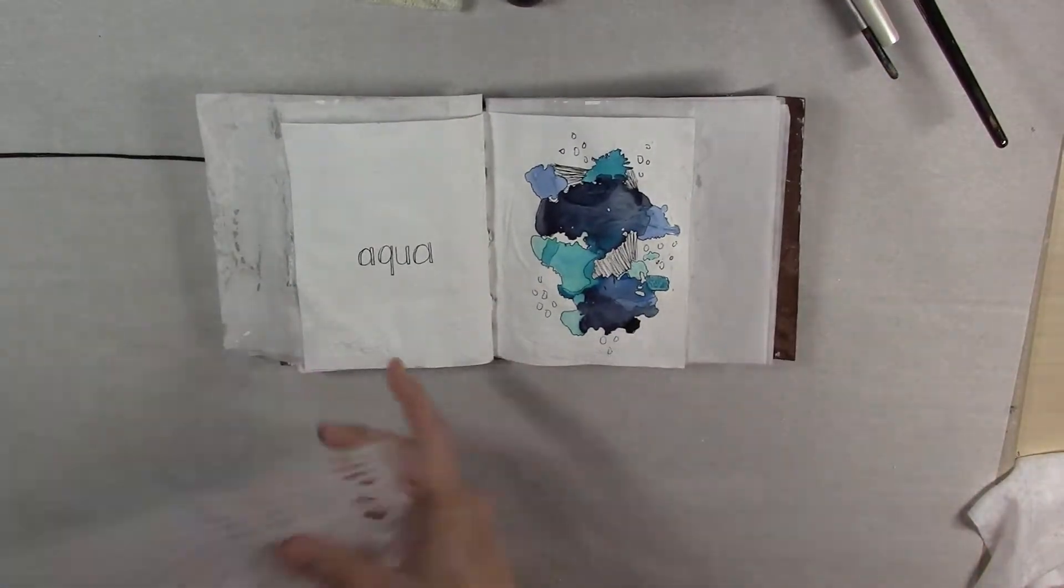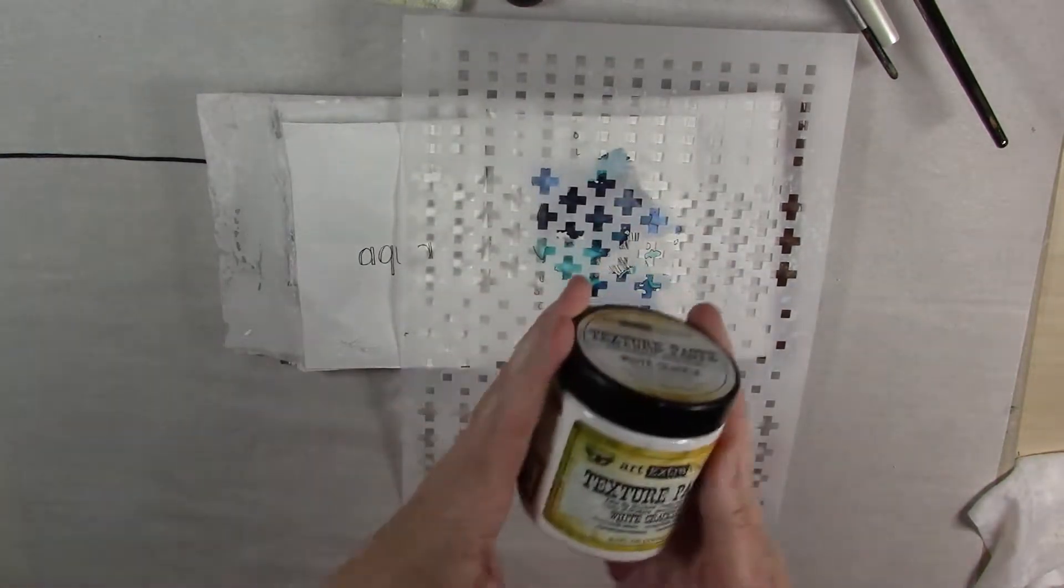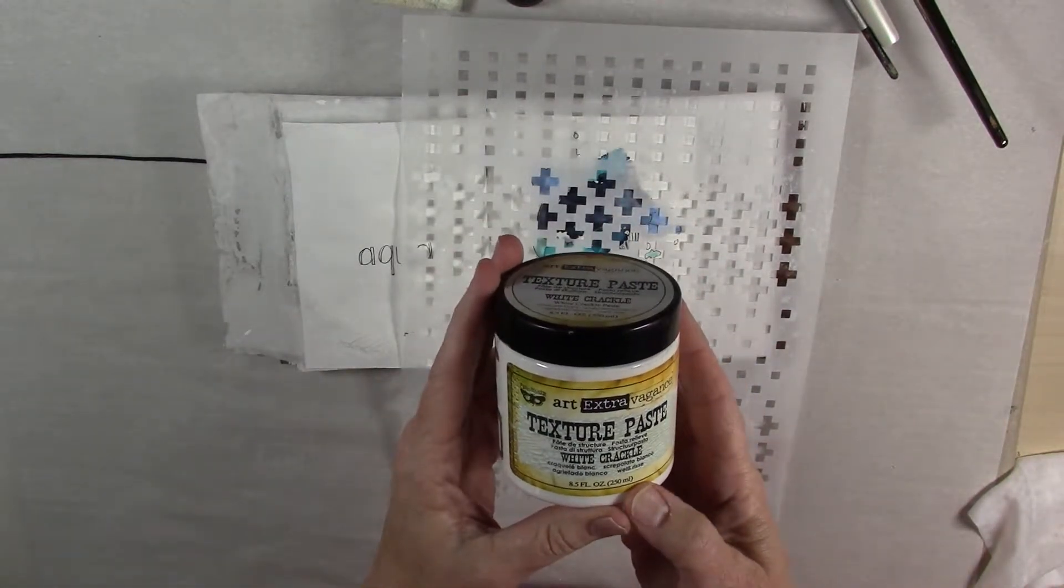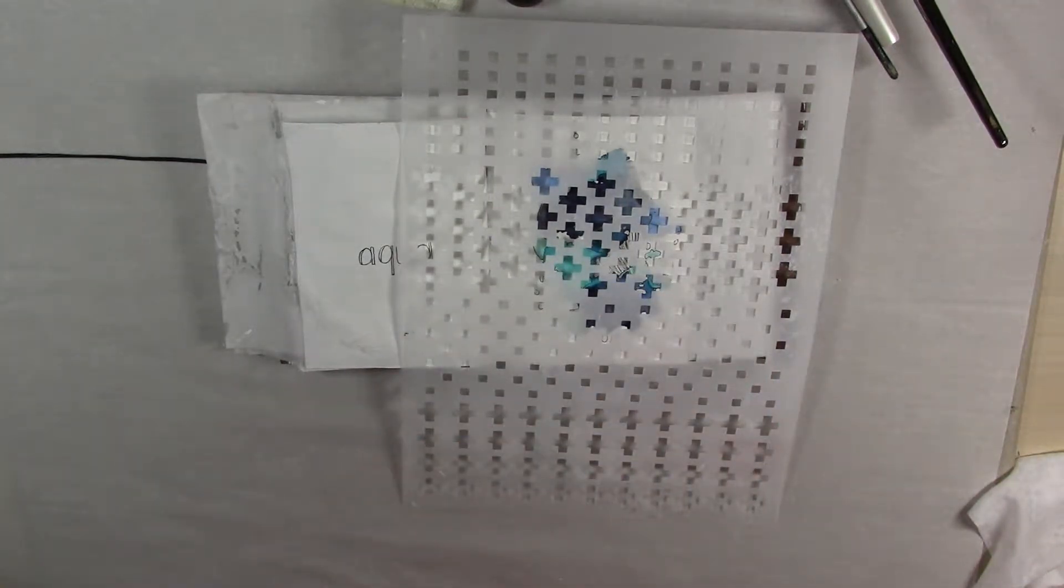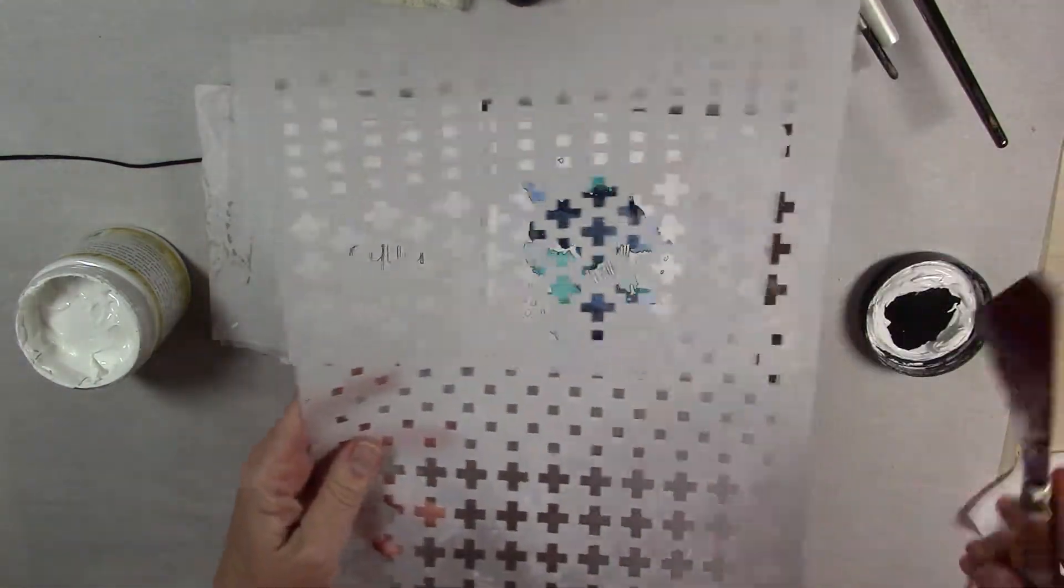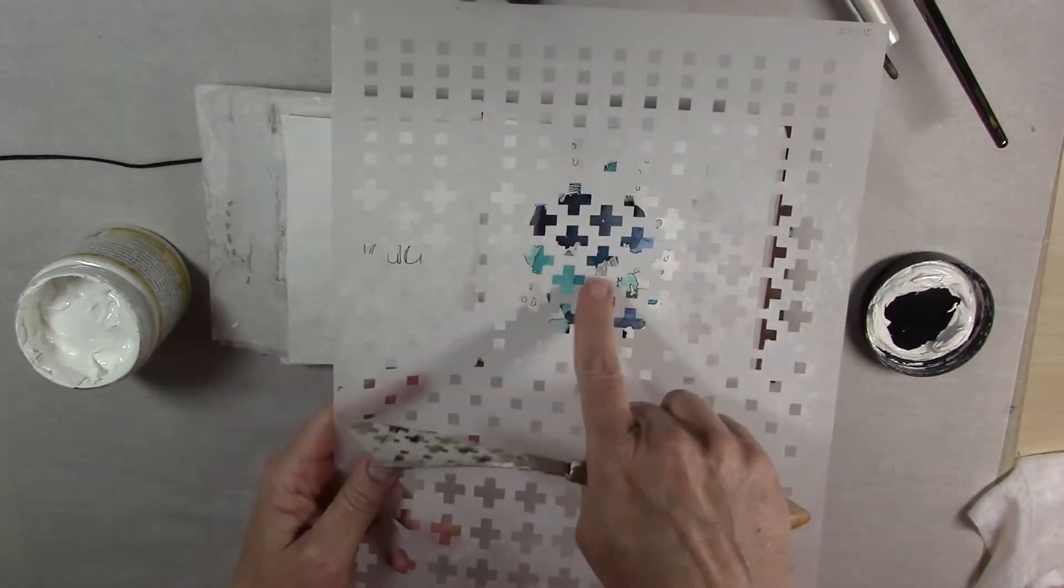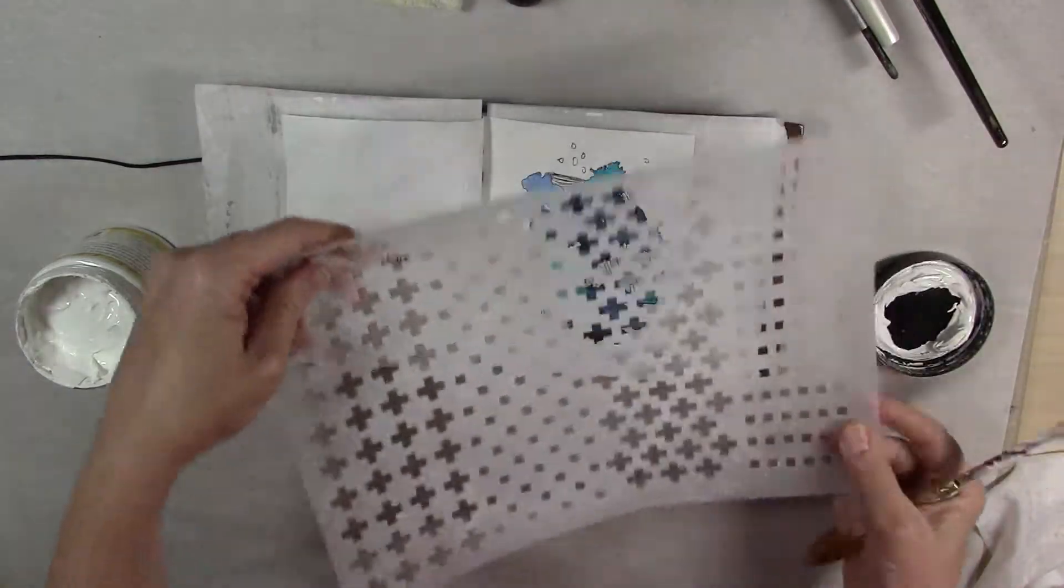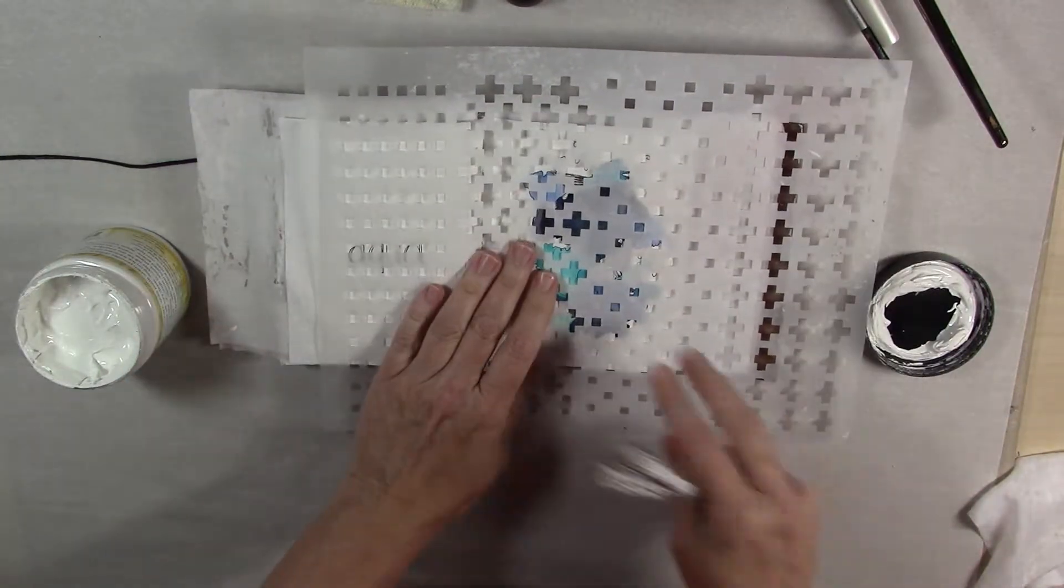So the next step is I take this wonderful Stencil Girl stencil and I'm using some Finnabair texture paste, the white crackle. And I'm going to apply some of this to this page on top of this design. So on most of my pages I was using these square marks and these X marks.